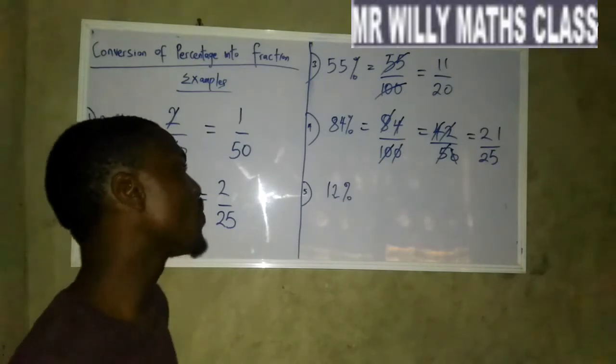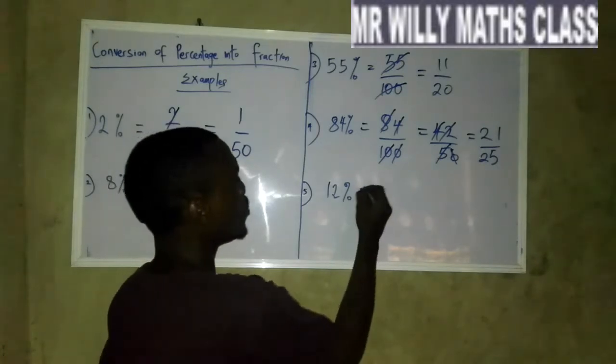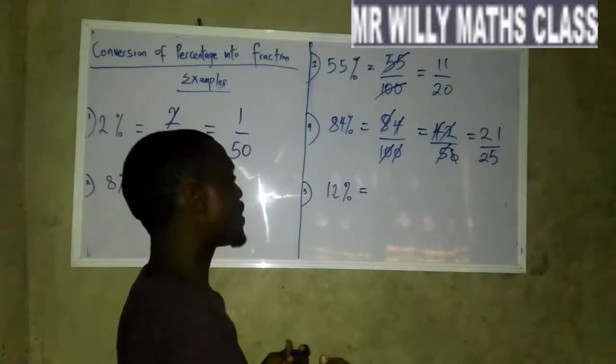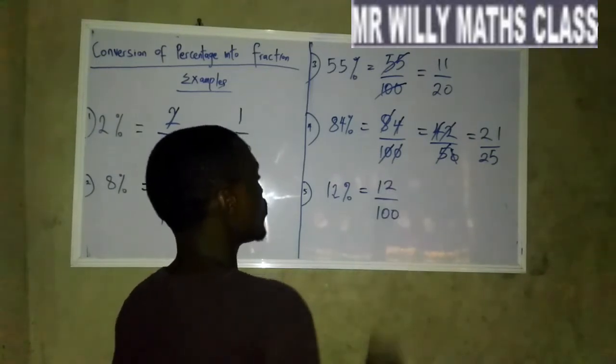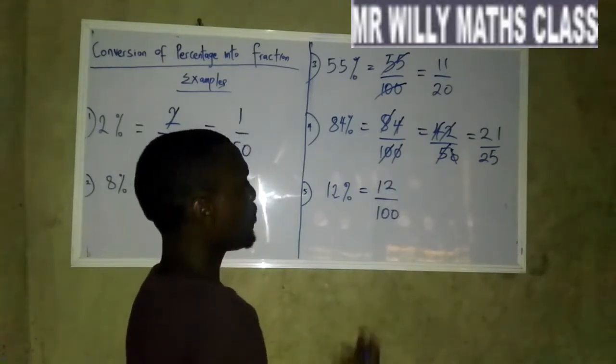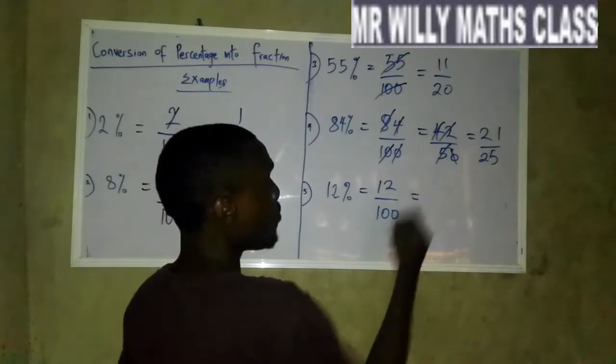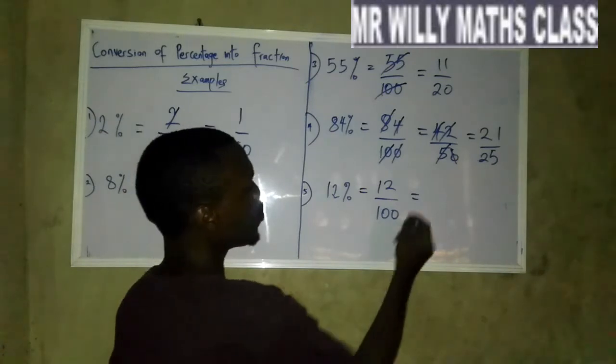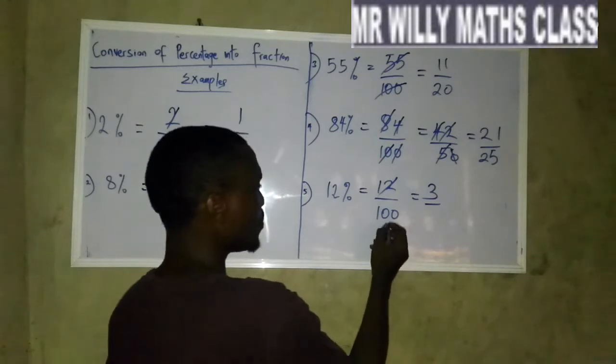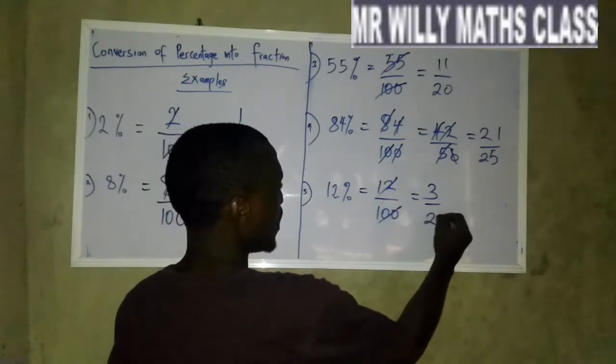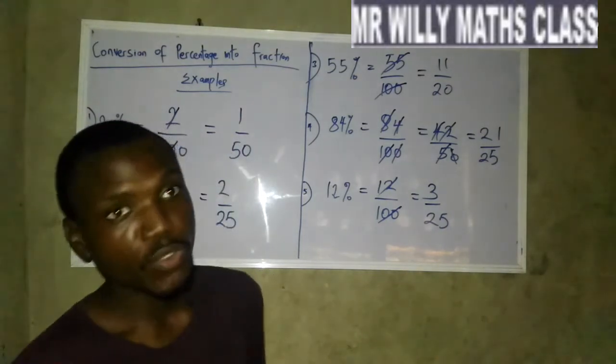Now the last question for this class, you have 12%. The first thing you need to understand is that your percent simply means divided by 100. That will be 12 divided by 100. The next thing is look for a common factor. You can use 2, you can use 4. I would prefer we use 4 to make our work faster. 4 goes into 12 three times and how many 4 can you see in 100? That's 25. Now the answer is 3 over 25.